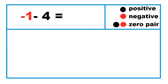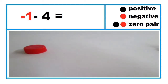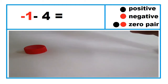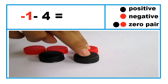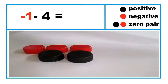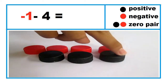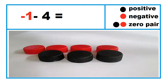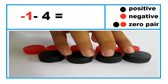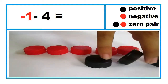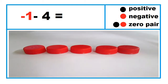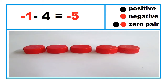Another example: negative 1 minus 4. To take away four black caps from one red cap, introduce four zero pairs, then take away four black caps. So, negative 1 minus 4 equals negative 5.